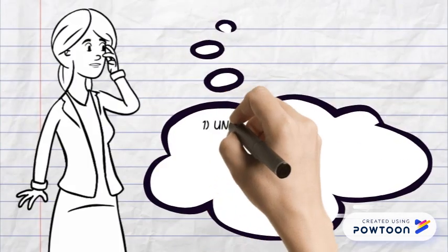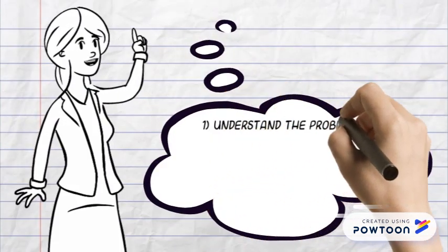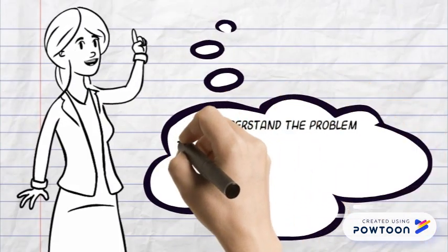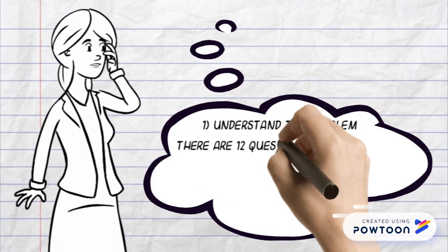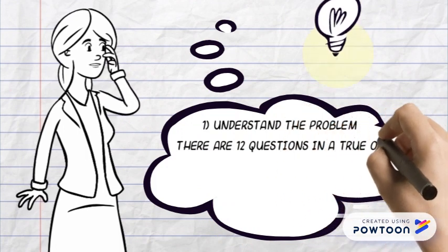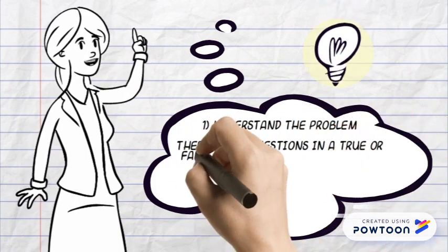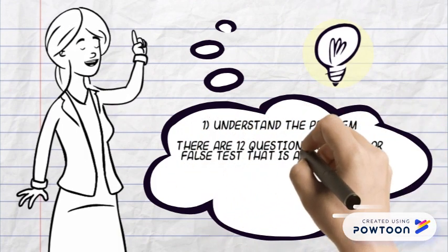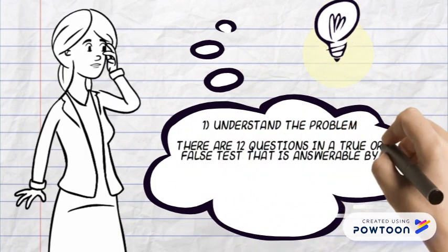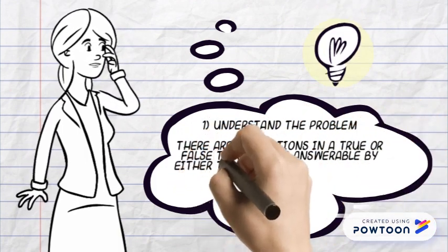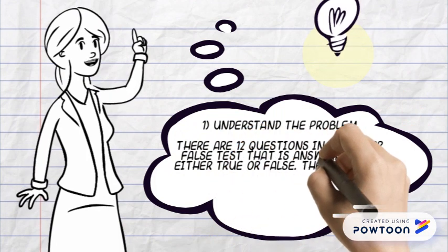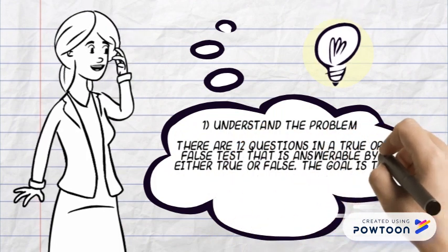First, understand the problem. There are 12 questions in a true-or-false test that is answerable by either true or false. The goal is to determine the total number of ways the questions can be answered.